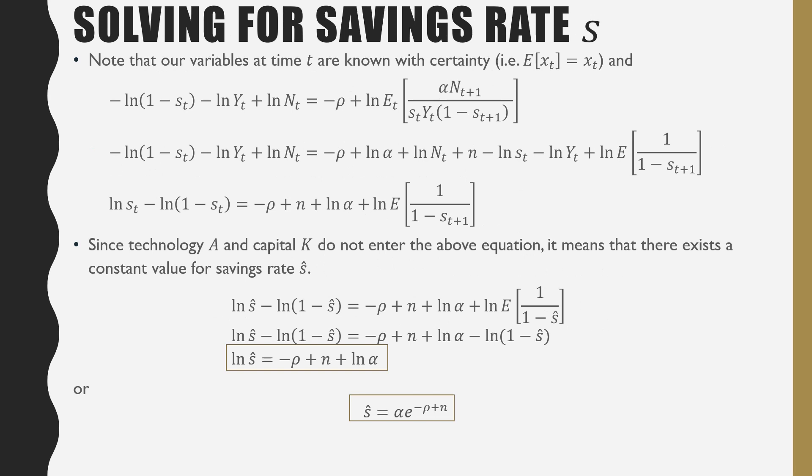Moving along, note that the variables at time T are known with certainty. So for example, if we have a variable X at time T, the expectation of it would just be X_T, because that knowledge is already known. So we can just pull that out of our expression, all the T's out of our expression, and just treat them as just regular logged variables. That's described in the second line from the top that we have over here. Moving the S values over to one side, and holding our expectation on the other side, we get the following.